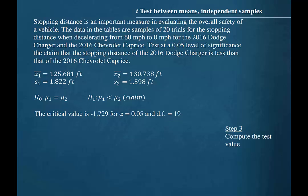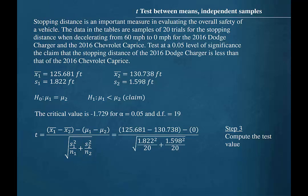Step 3 is to compute the test value. In the formula for the t-test value, we will find the differences between the sample means and the differences between the hypothesized means and subtract them. We will divide that quantity by the square root of the sum of the variance for group 1 divided by the sample size for group 1 and the variance for group 2 divided by the sample size for group 2. Substituting these values into this formula, we see that the difference in the hypothesized means is 0.